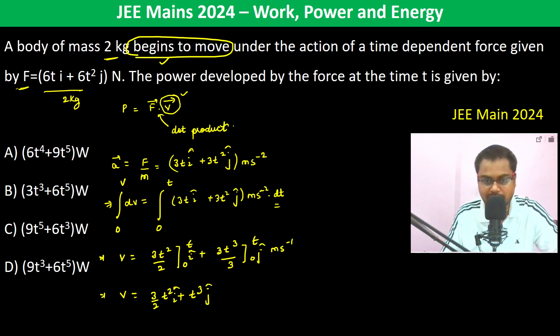Now we have to do the simple thing that is F dot V which is power. So therefore 6T I cap plus 6T square J cap dot 3 by 2 T square I cap plus T cube J cap. Now I will go with I, J will go with J because I dot J is 0, J dot I is 0.